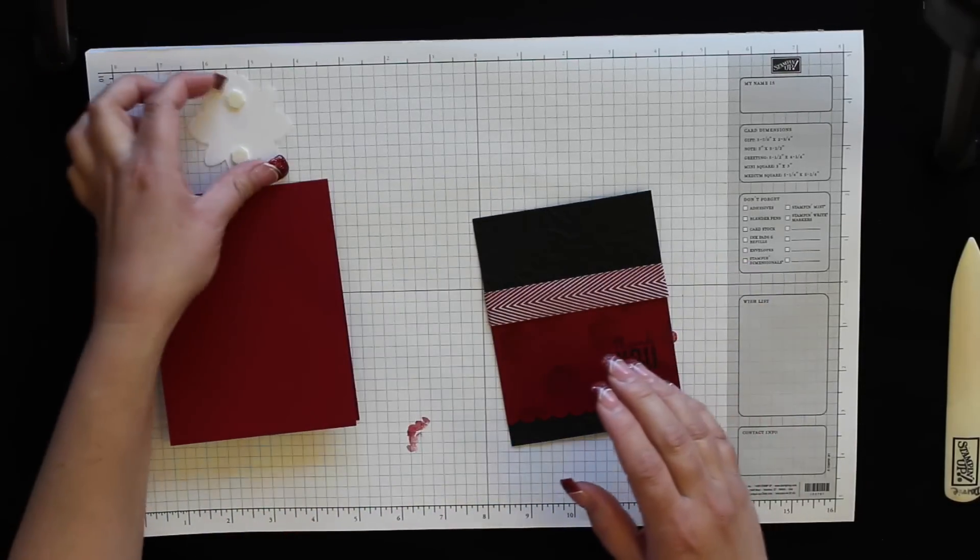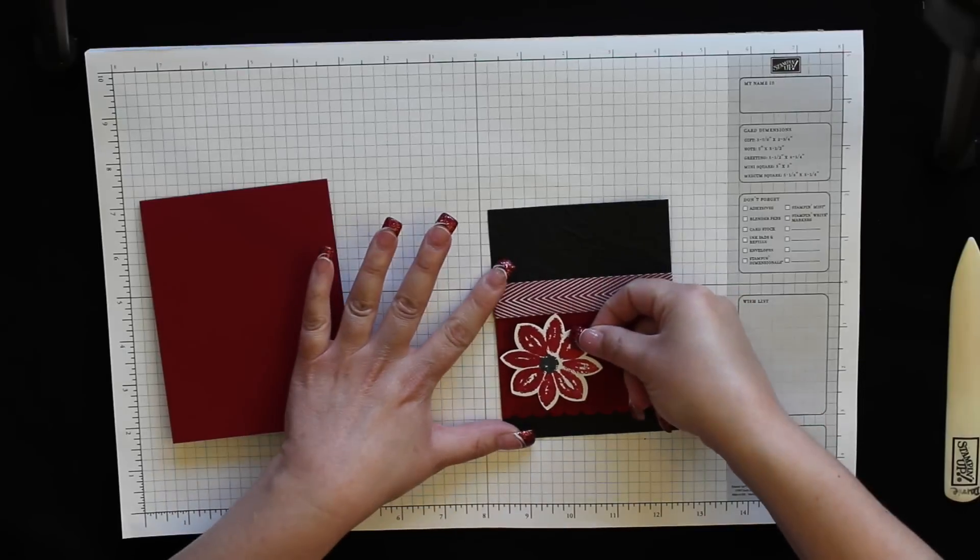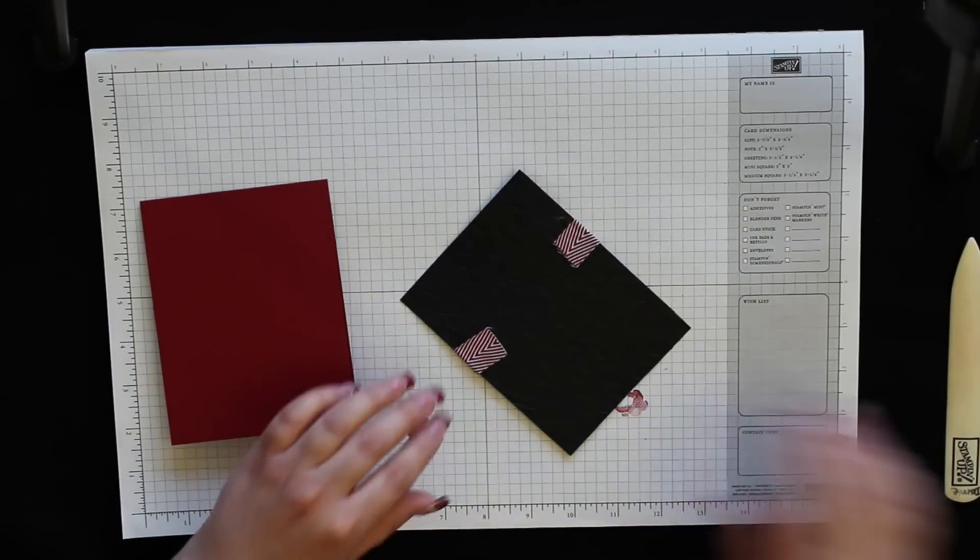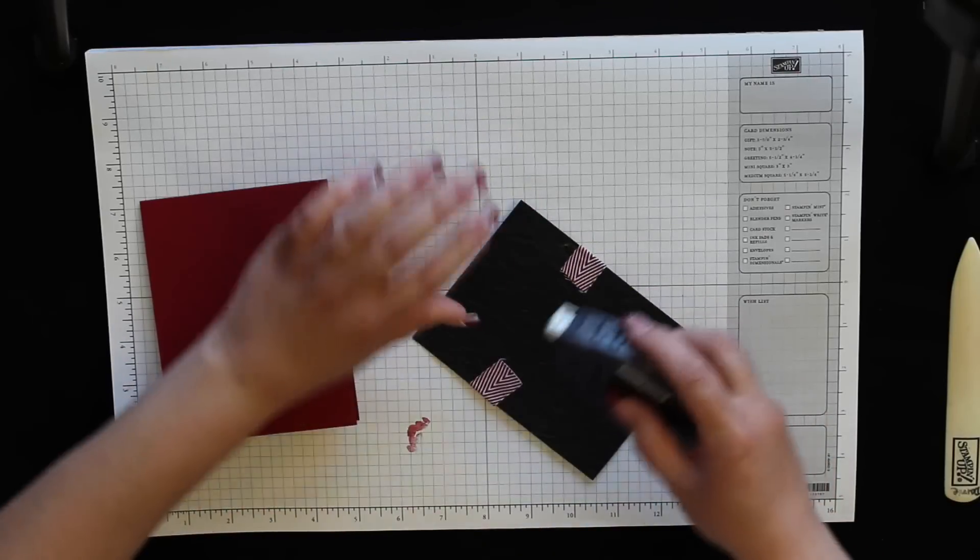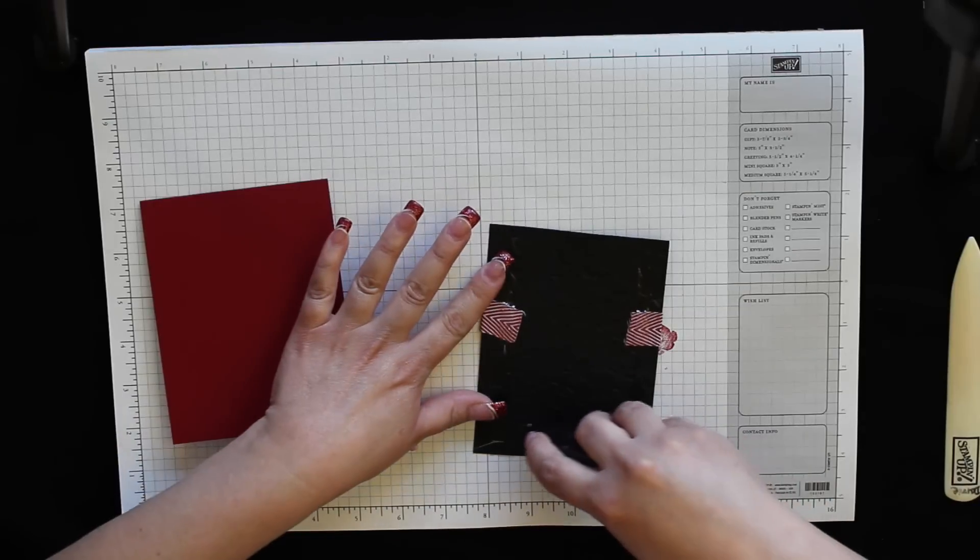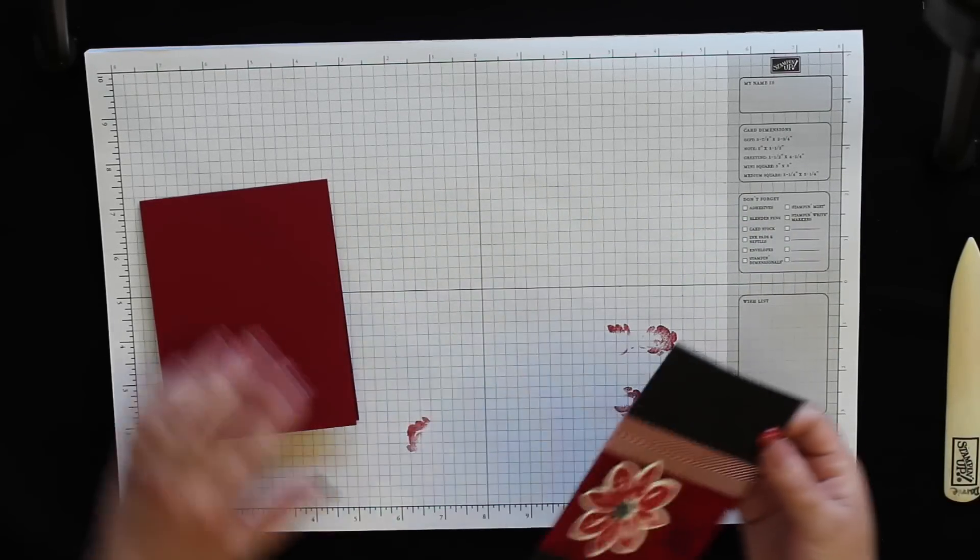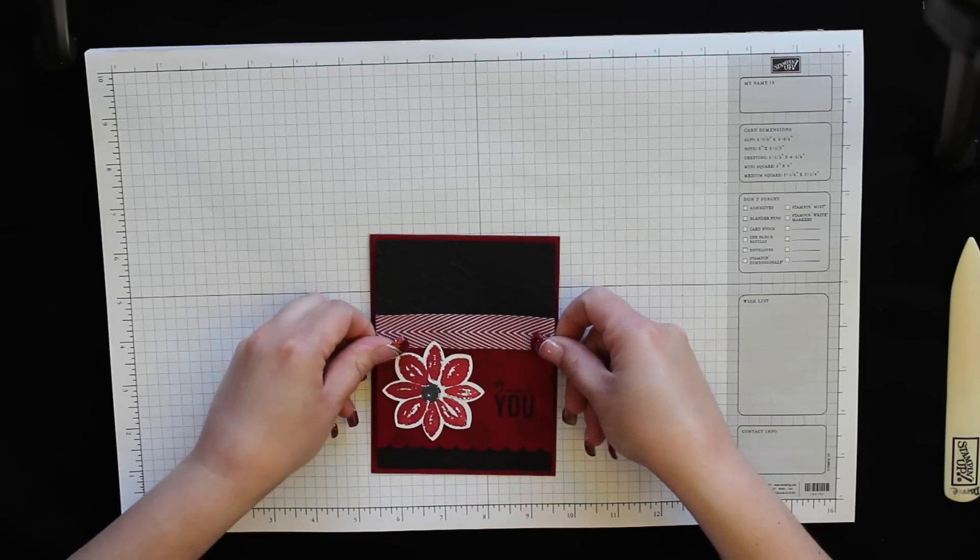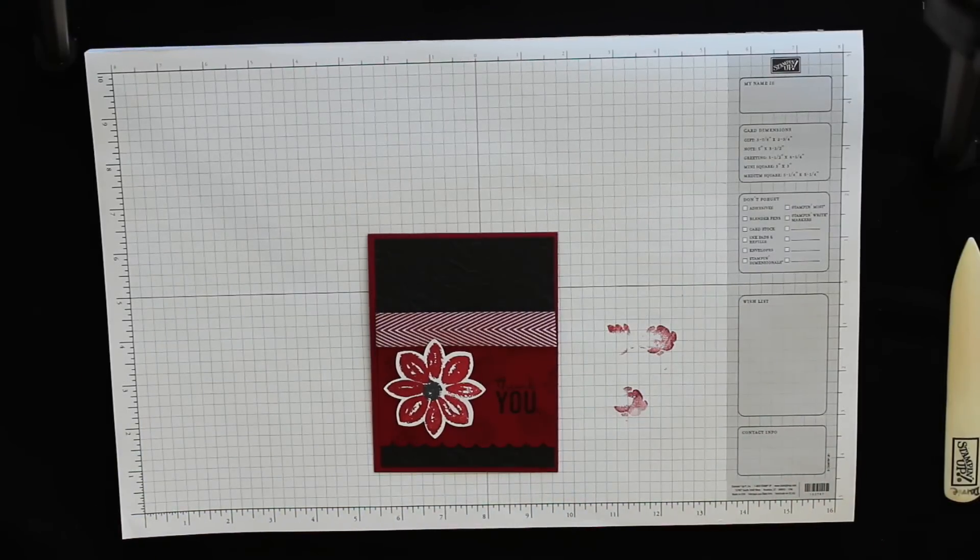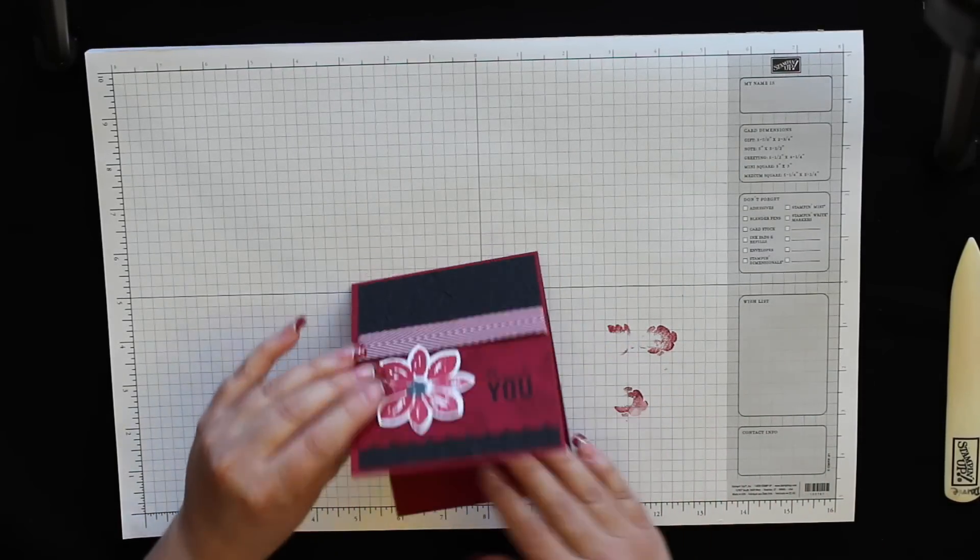Put my flower on. And again, since there's ribbon on the back, now I'm going to be using my fast fuse just to make sure it stays in place. Now for most people, that right there, the card would be done. But if you guys follow my blog, you know that I love to decorate the insides of my cards as well.